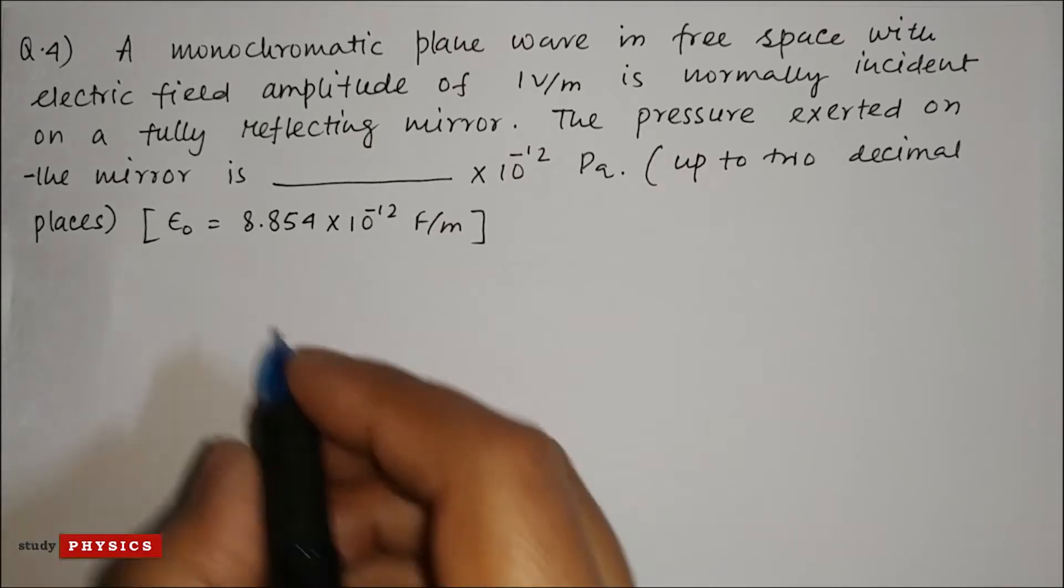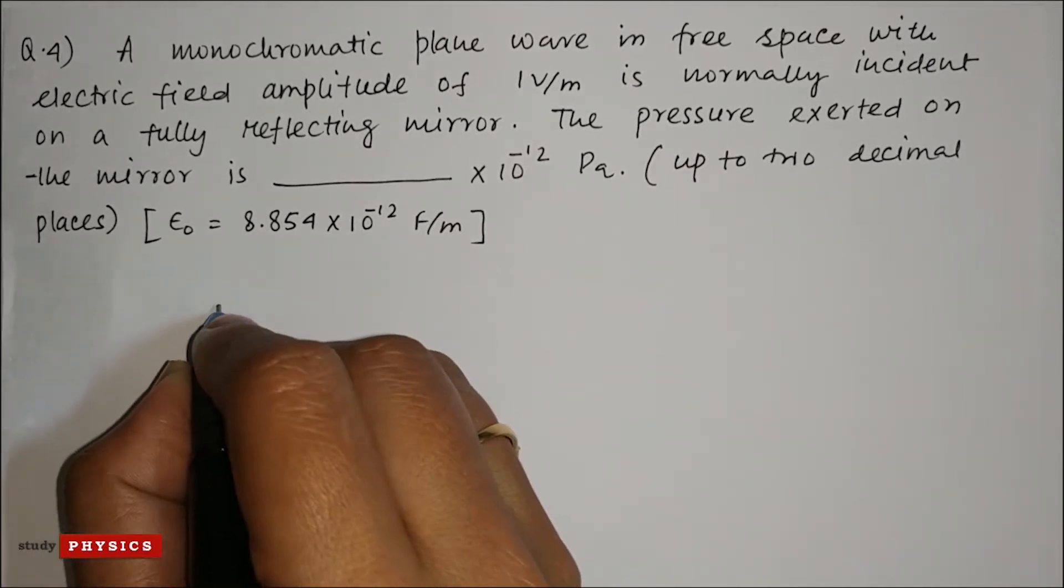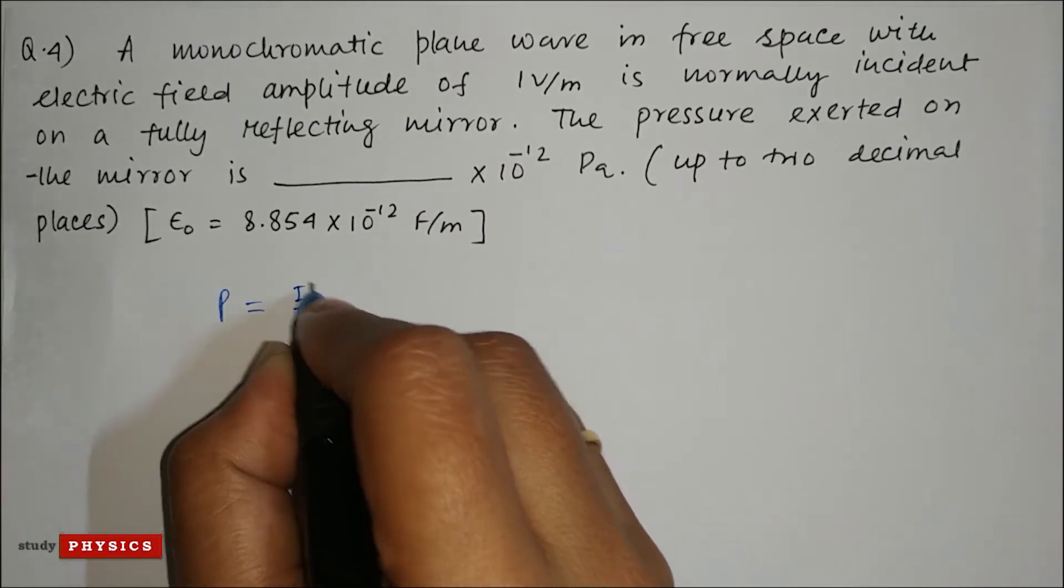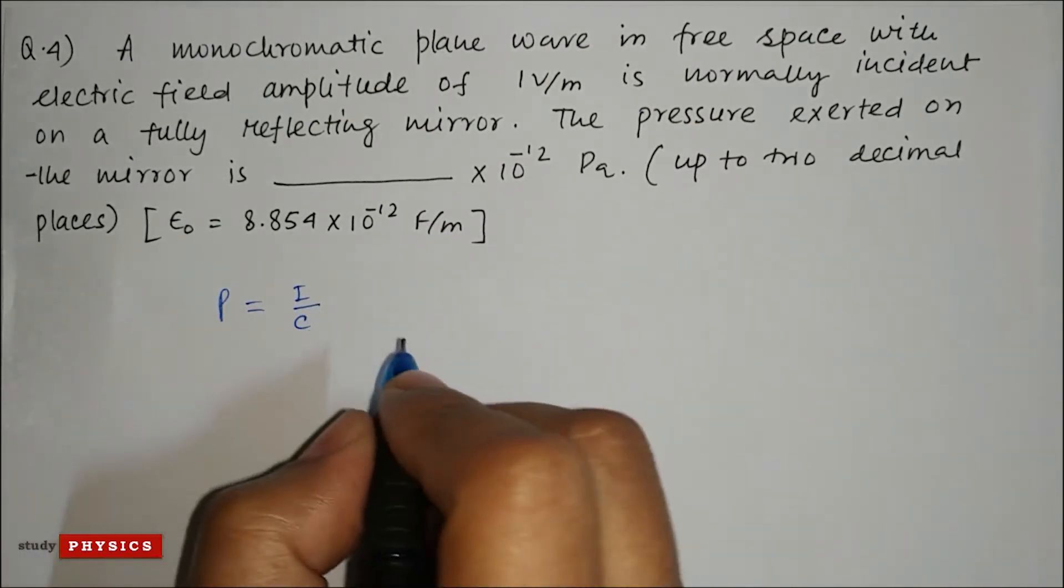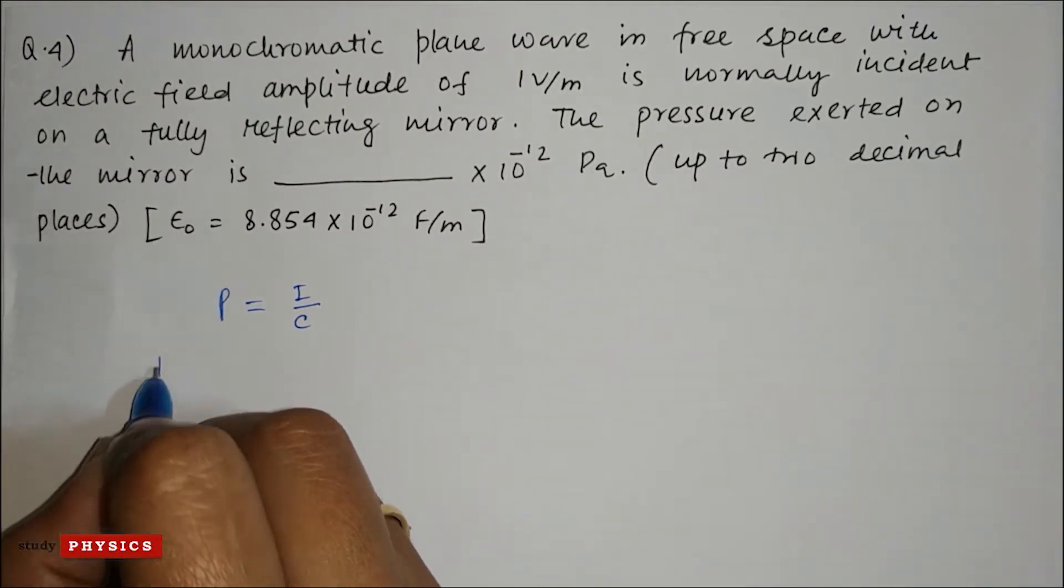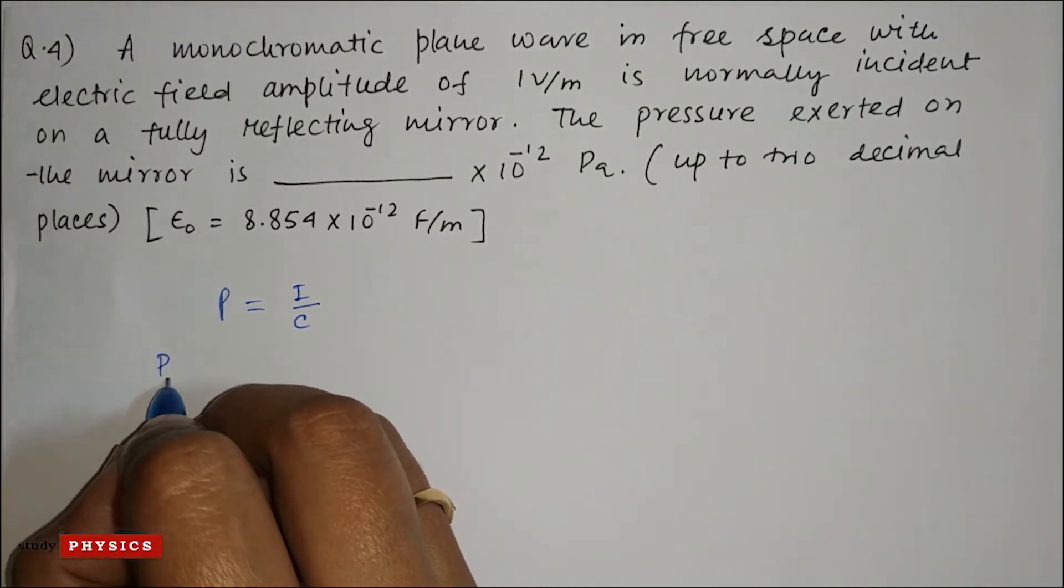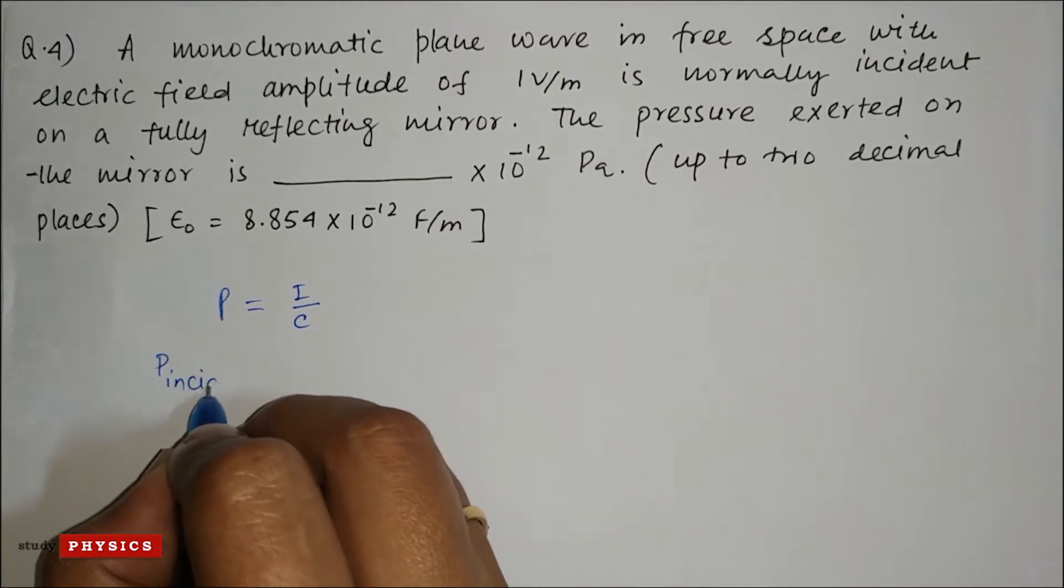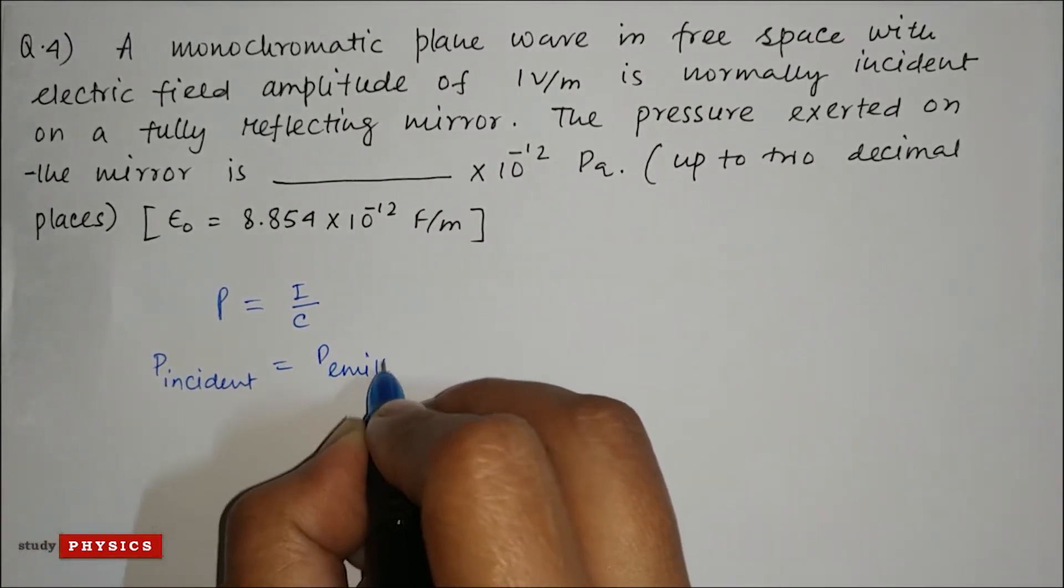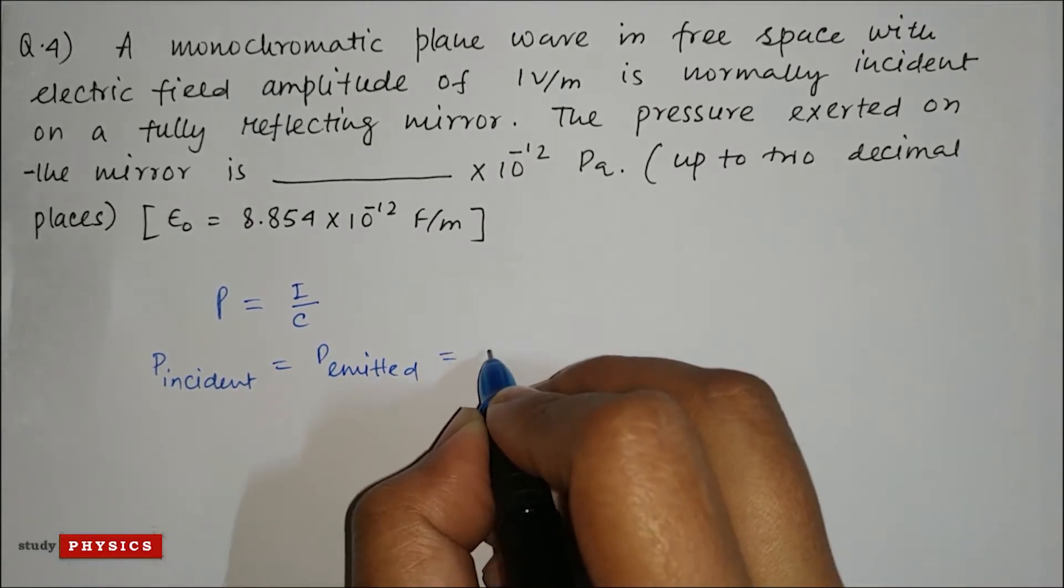We know the radiation pressure P is I divided by c, where I is the intensity. But here this is a reflecting mirror, that means the incident pressure and the emitted pressure both are the same, which is I divided by c.